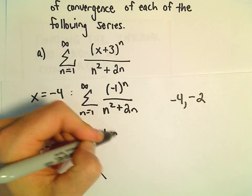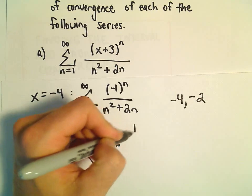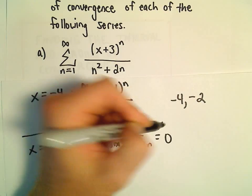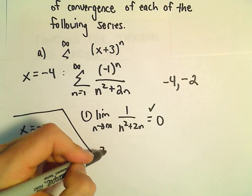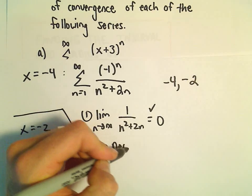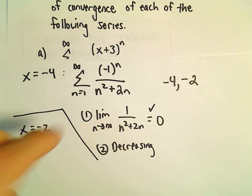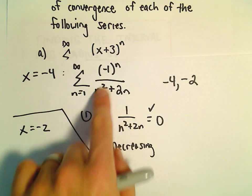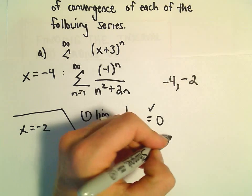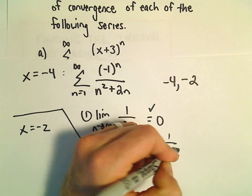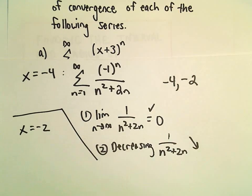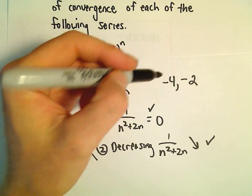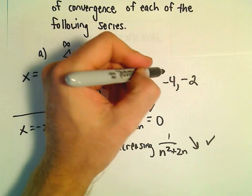So, two conditions. The limit as n goes to infinity of 1 over n squared plus 2n. That definitely equals 0. And the other thing is, is it decreasing? But again, you can plug in, you know, n equals 1, 2, 3, 4. The denominator is going to get larger and larger and larger. So, certainly 1 over n squared plus 2n. That is going to be decreasing. So, both conditions are satisfied, which means our series does converge at negative 4.